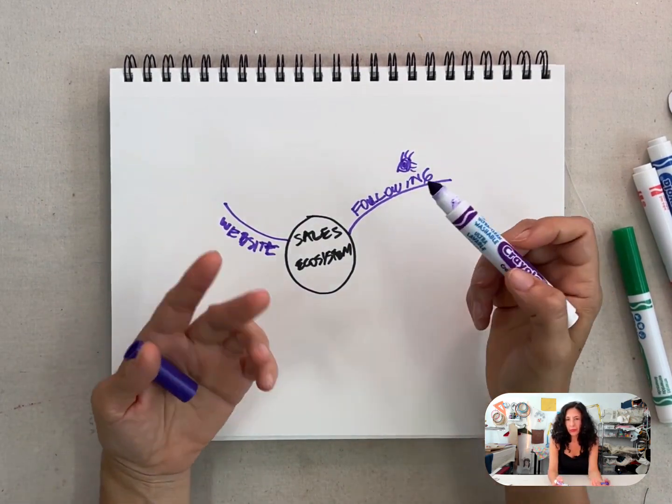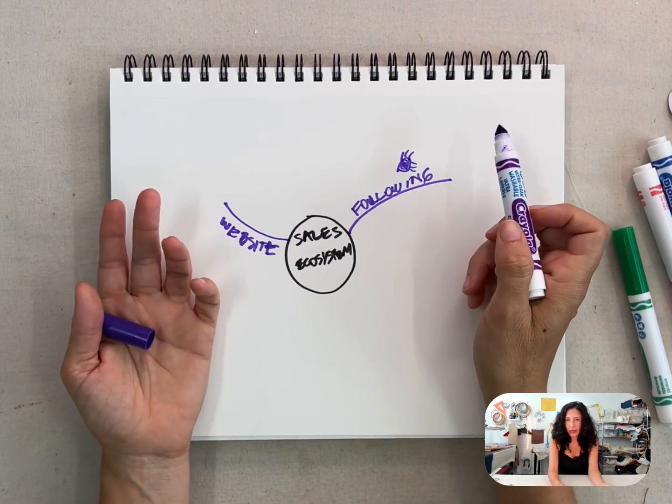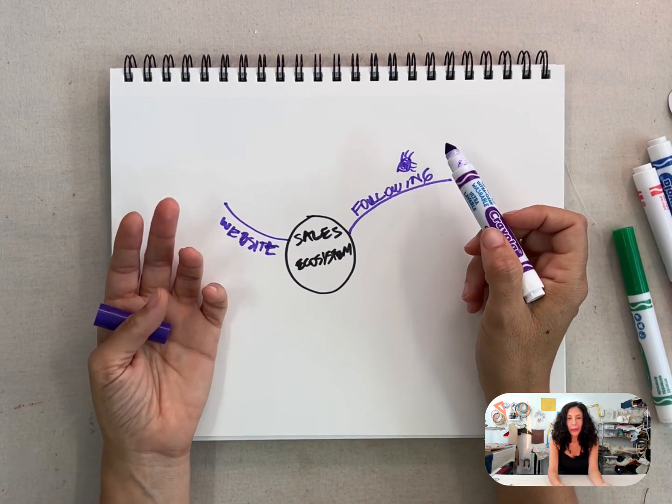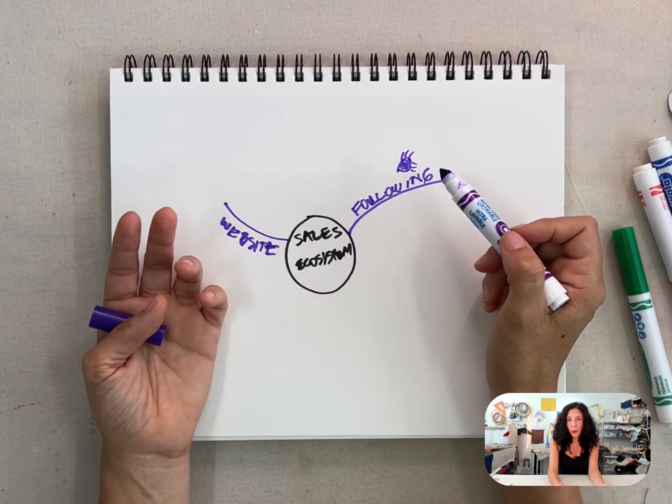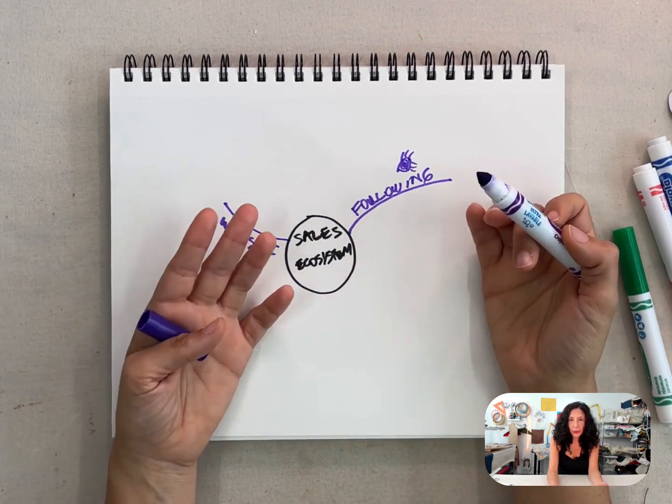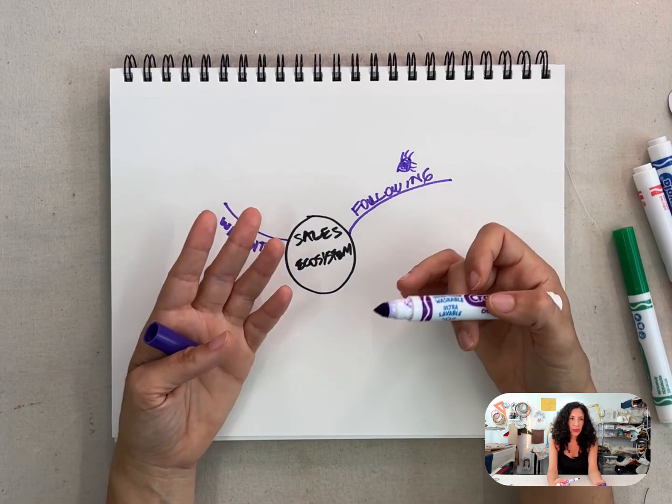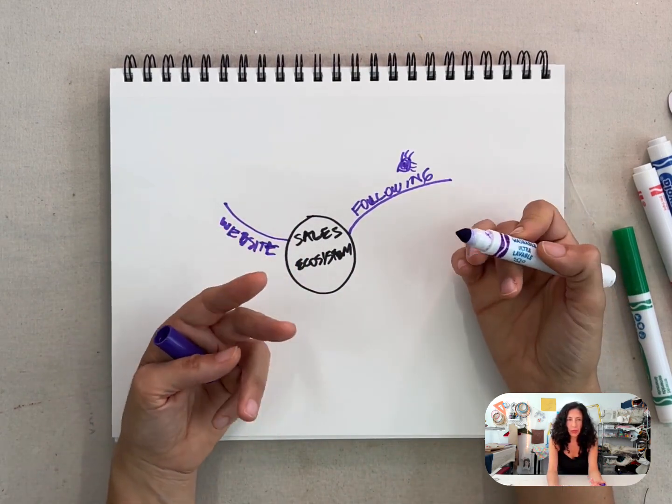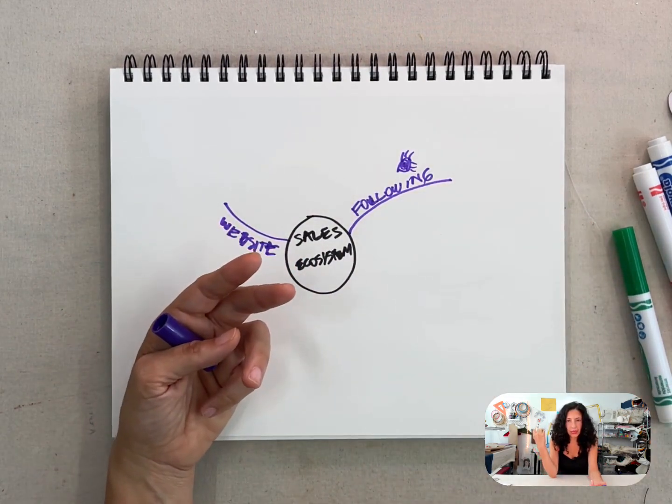And then look, when you have a following, you know that everybody who likes me, I have over 10,000 followers on Instagram, but that doesn't mean that all those people are really ideal people for me. Some of them are, some of them are not. Some of them are just curious or some of them just followed me years ago and they keep following me but it doesn't mean much.